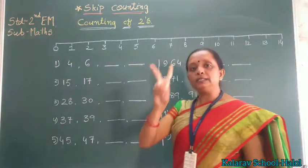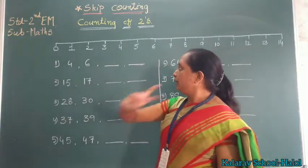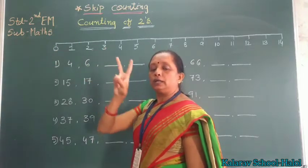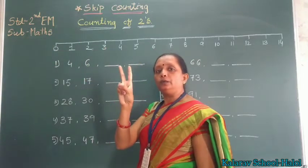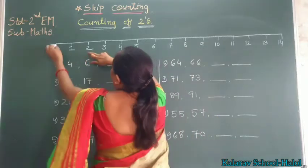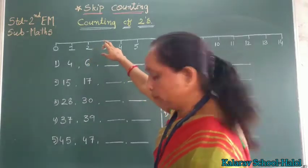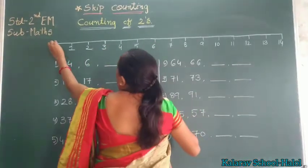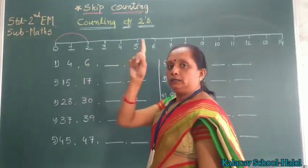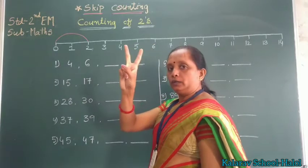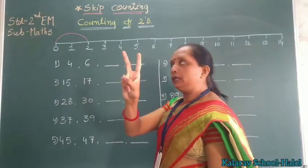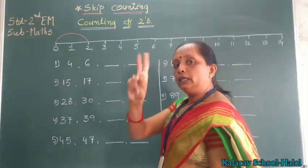Counting of 2, 2 means you know, right? So, first we are going to start here. Counting of 2 means you know, 2. So, 1, 2, right? After 2, 3, 4, right?